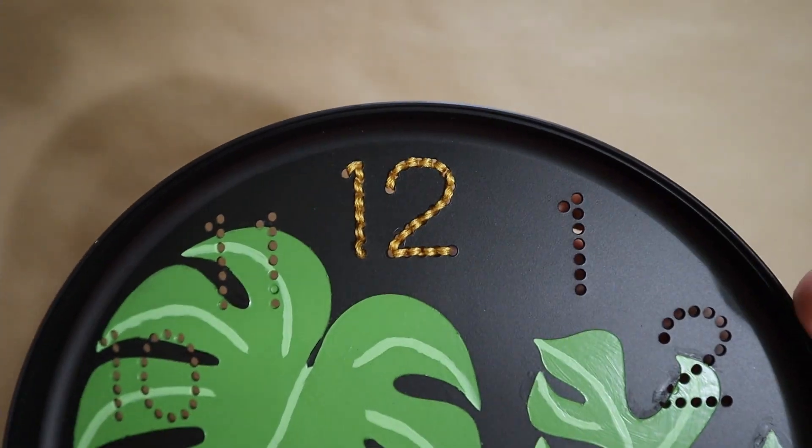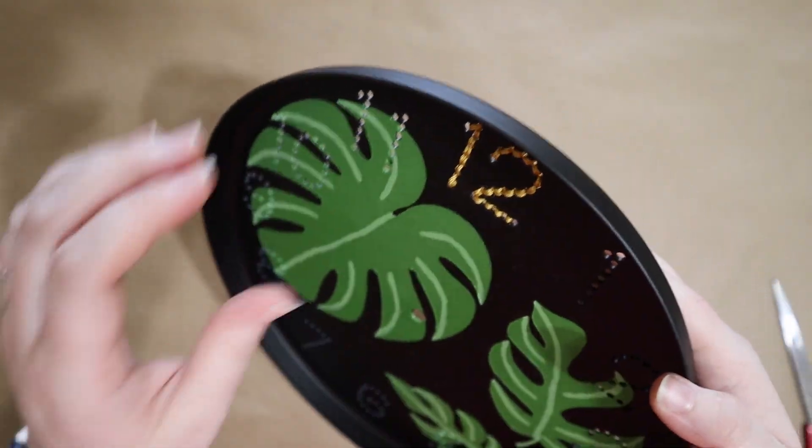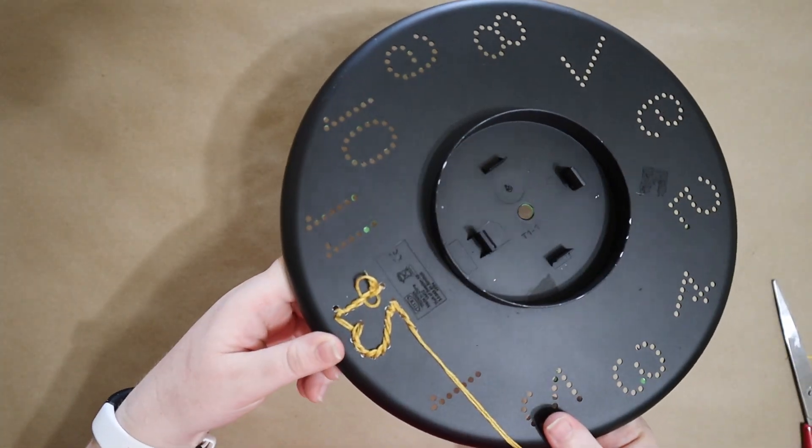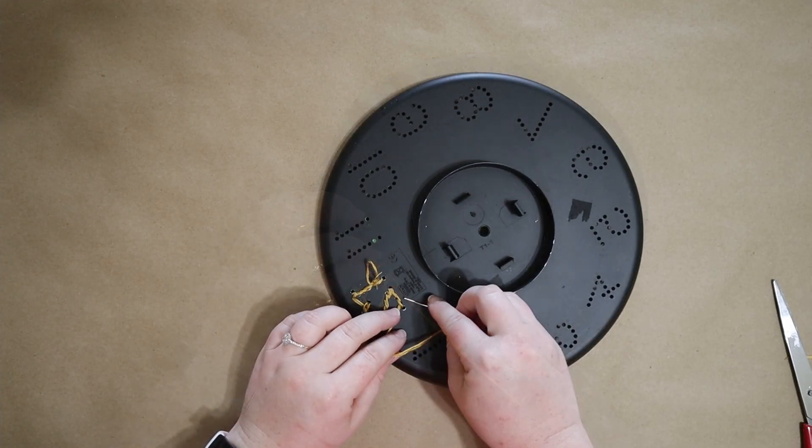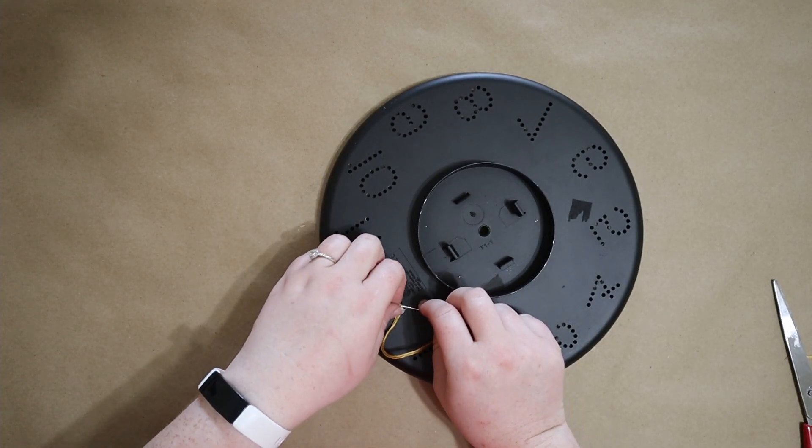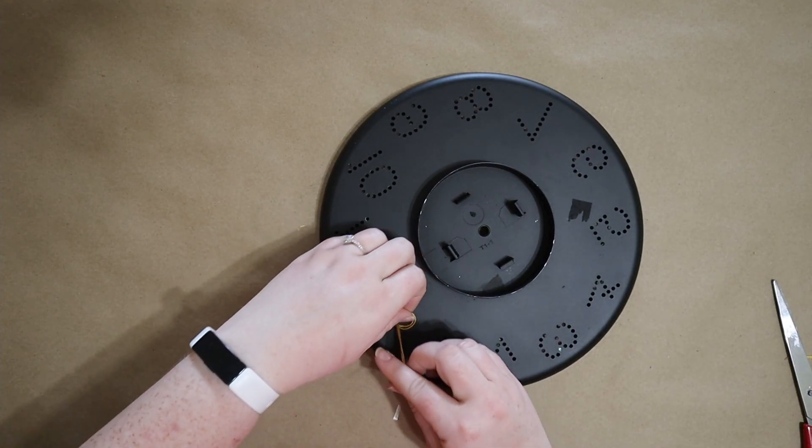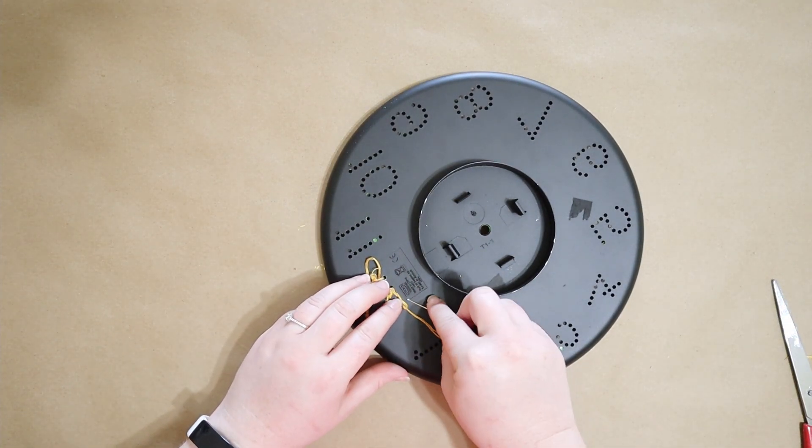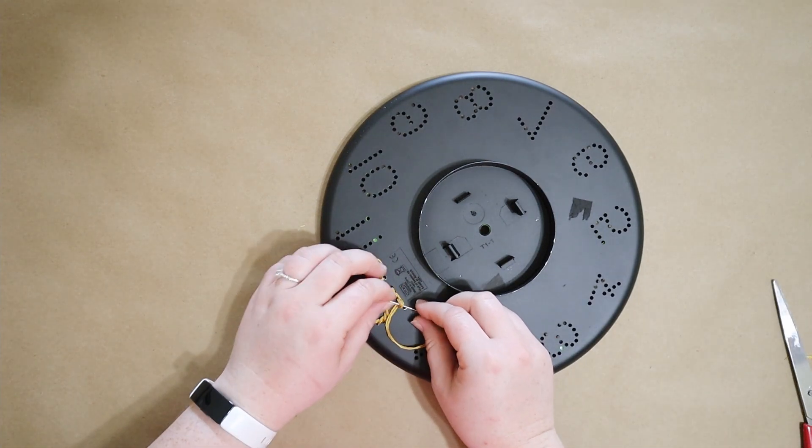This step is so easy and look at the huge impact that it has. When you've run out of thread, just flip it over and carefully tie it off and knot it securely. You're going to re-thread your needle using the same steps, moving through all the numbers to get everything finished.